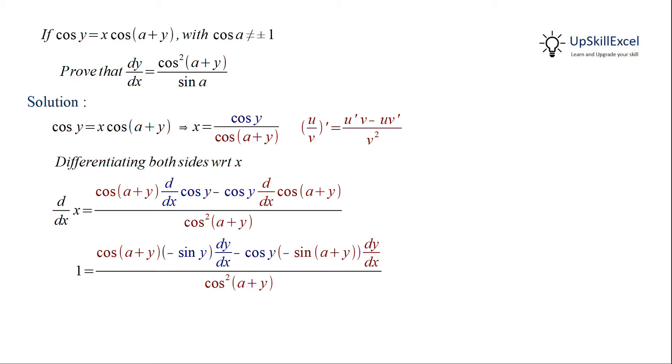Now in the numerator we can take dy/dx common, and the denominator cos²(a + y) can be taken to the left-hand side. On the right-hand side, if we compare this with sin(a + b) formula, we observe that we can apply this with a equal to (a + y) and b equal to y.